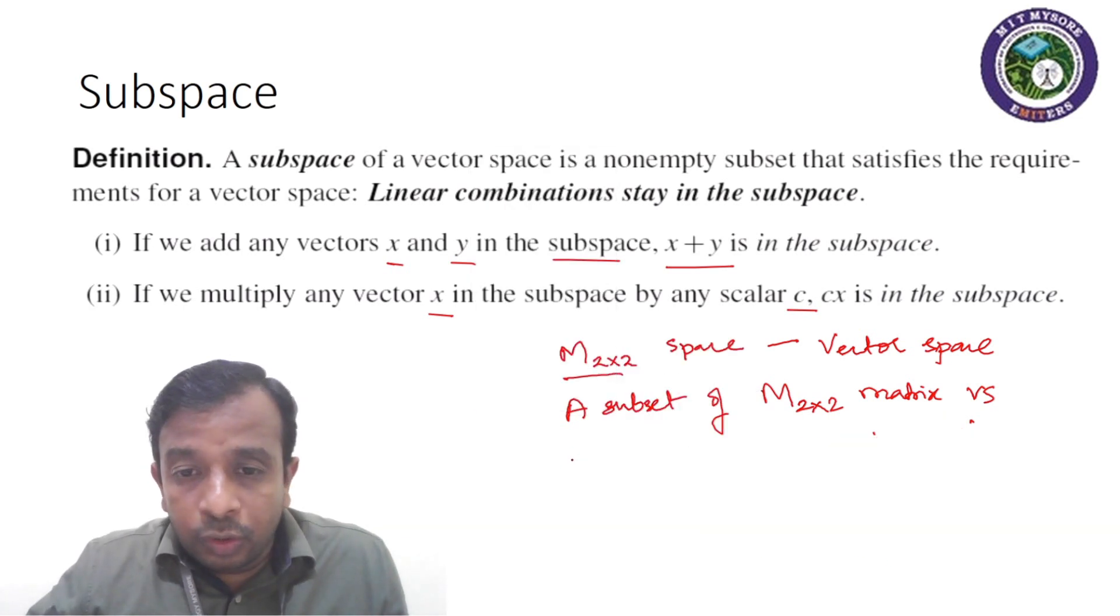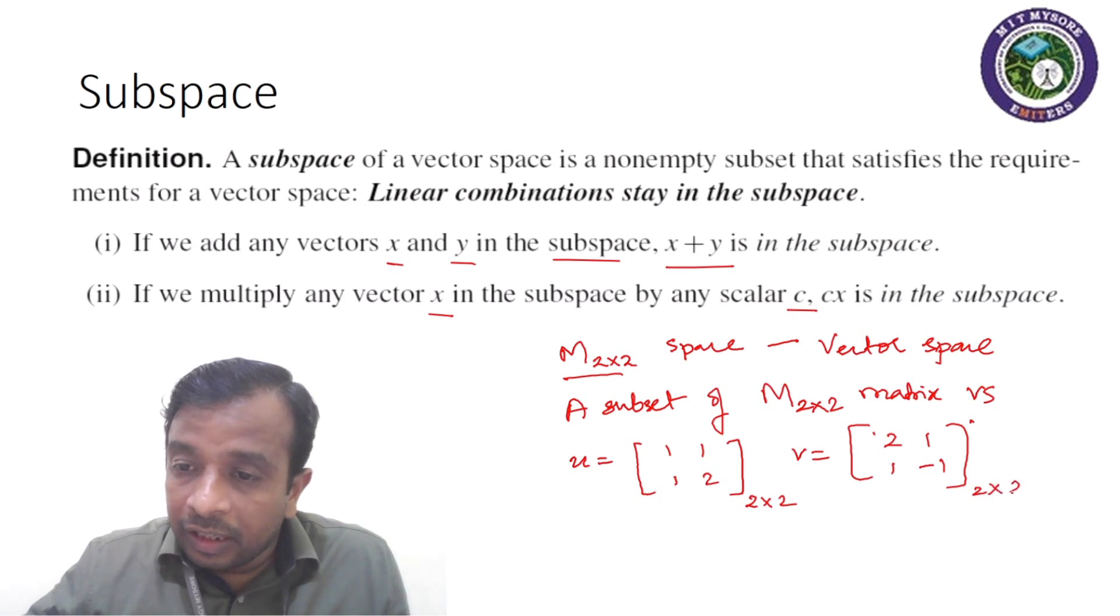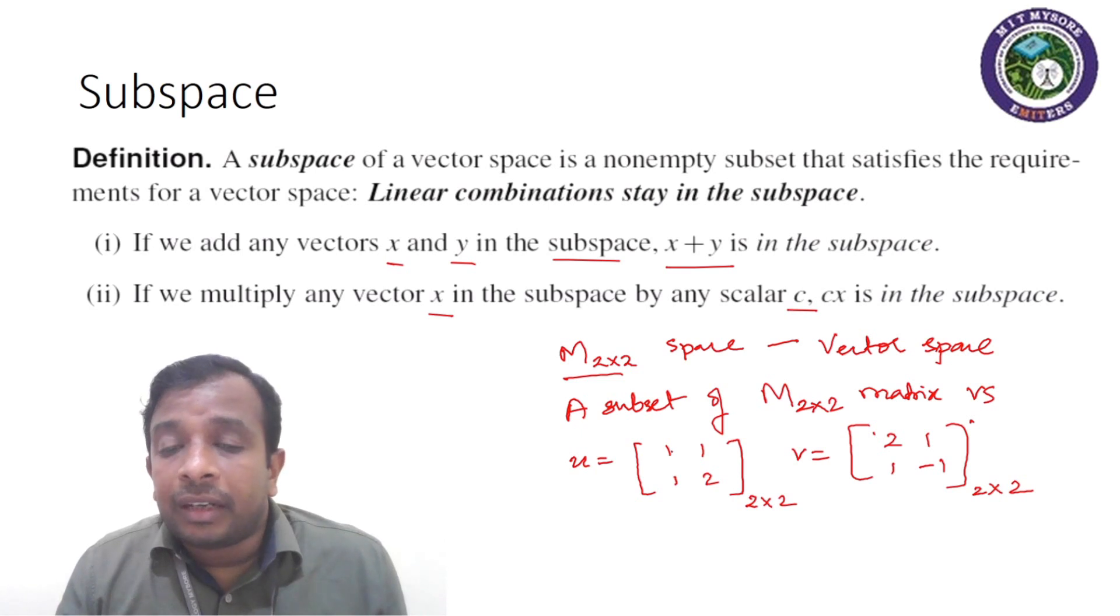And if I consider two symmetric 2 by 2 matrices, for example, U to be 1, 1, 1, 2, and V to be 2, 1, 1, minus 1. So these are 2 cross 2 matrices and these are symmetric.